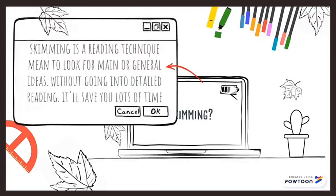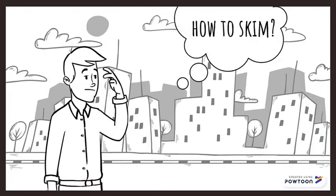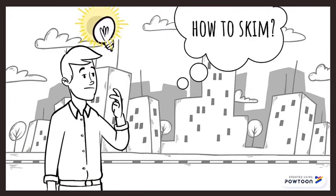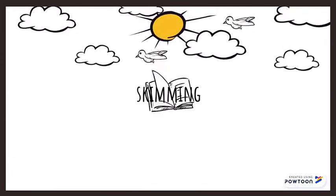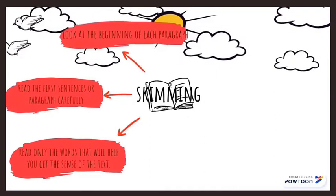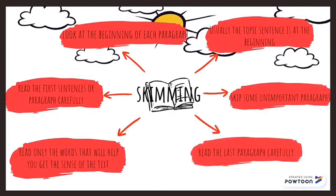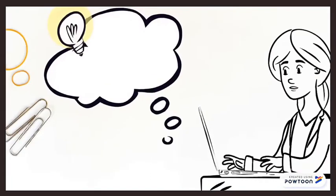Now let's move on to skimming. So what is skimming? Skimming is a reading technique meant to look for main or general ideas without going into detailed reading — it will save you lots of time. When we practice skimming, you have to read only the words that will help you get the sense of the text, and usually you can find them at the beginning of each paragraph. Also read the last paragraph.